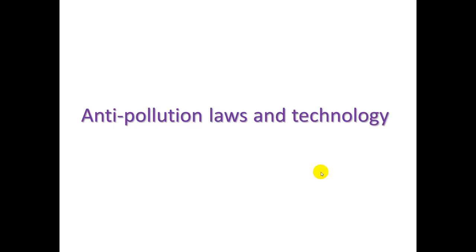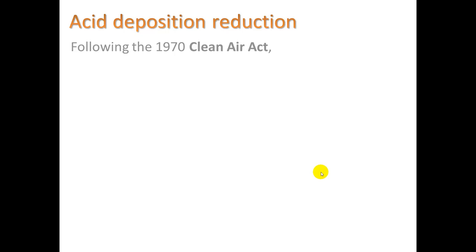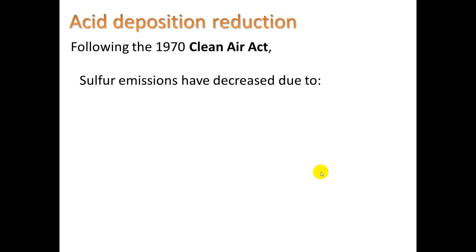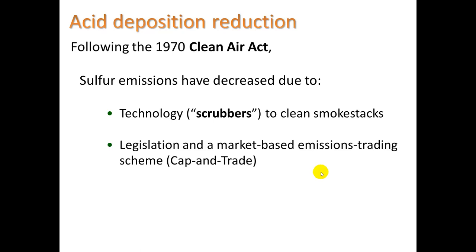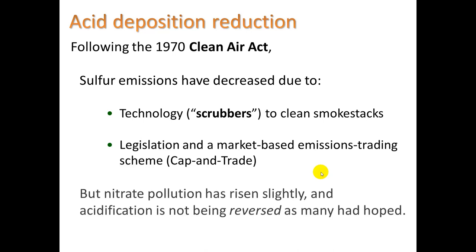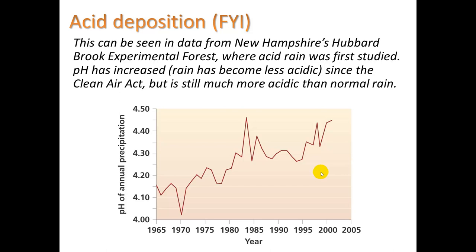Let's take a look at some anti-pollution laws and technology, some of which relate to acid rain. Following the 1970 Clean Air Act, there were great improvements. Sulfur emissions have decreased due to technology — especially scrubbers to clean smokestack emissions — and also legislation through a market-based emissions trading scheme called cap and trade, which came around in the 1990s. However, nitrate pollution has risen slightly and acidification is not being reversed as many had hoped. We can see data from New Hampshire's Hubbard Brook Experimental Forest, where acid rain was first studied — pH has increased, meaning rain has become less acidic since the Clean Air Act, but is still much more acidic than normal rain.